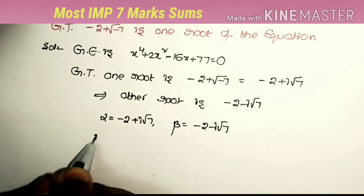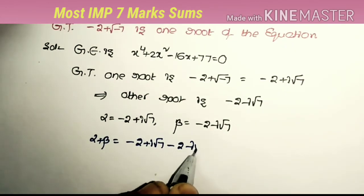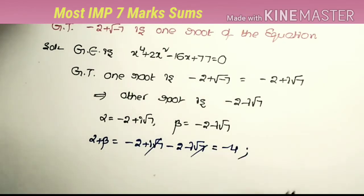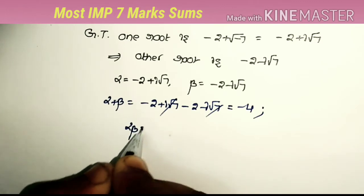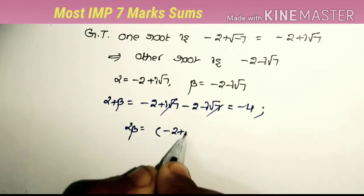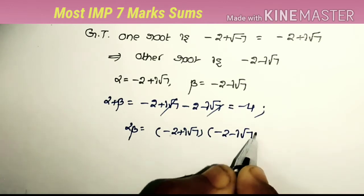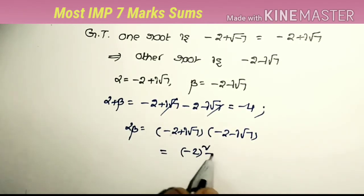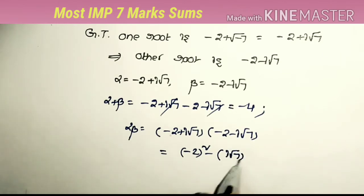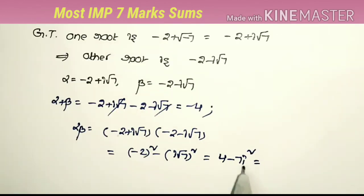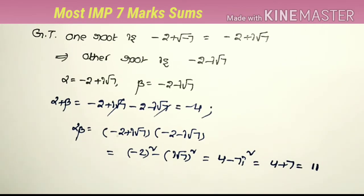To form the quadratic equation, we compute alpha plus beta = -4, and alpha times beta = (-2 + i√7)(-2 - i√7) = (-2)² - (i√7)² = 4 - 7i². Since i² = -1, this equals 4 + 7 = 11.